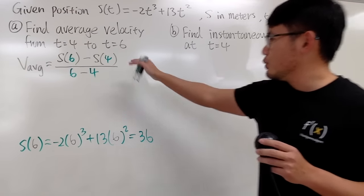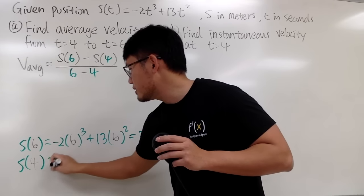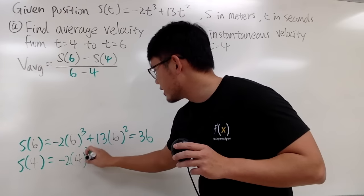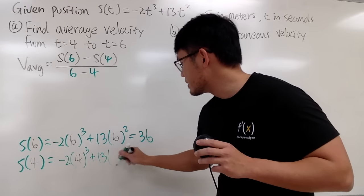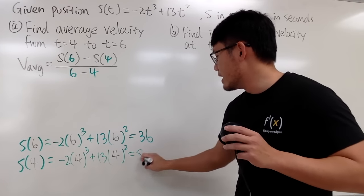And then, similarly, we calculate S of 4 by putting the 4 into all the t's right here. So we end up with negative 2 times 4 to the third power, plus 13 times 4 to the second power, and you end up with 80.